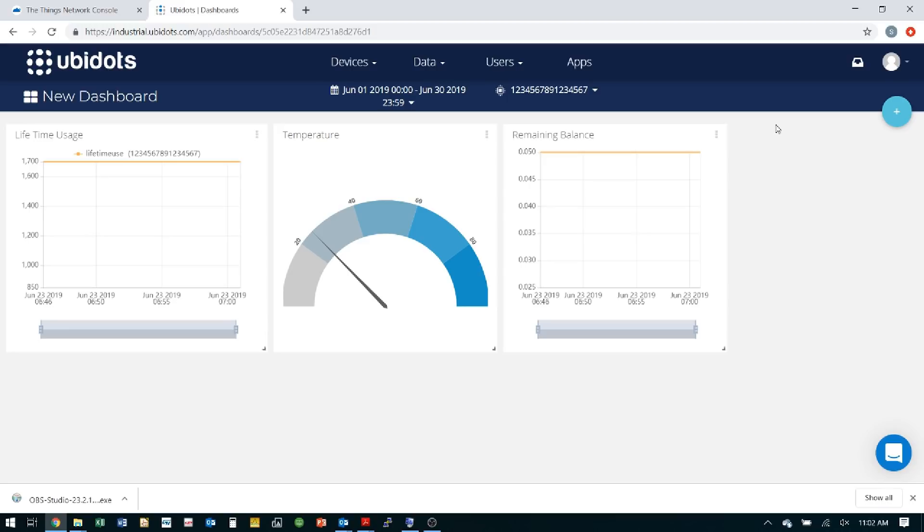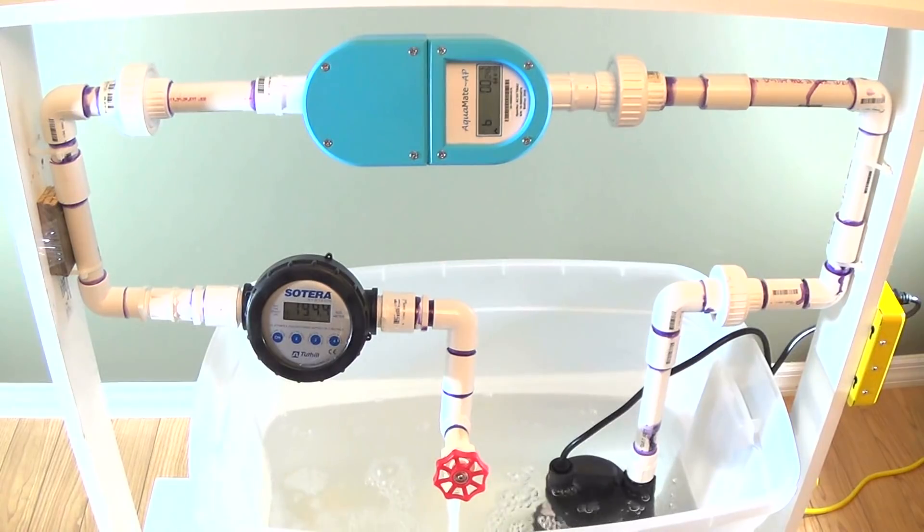Okay, so we can now open the tap. Okay, so we now have the water running. The Aquamate shows the available balance is now being used and decreasing and the lifetime volume is counting up.